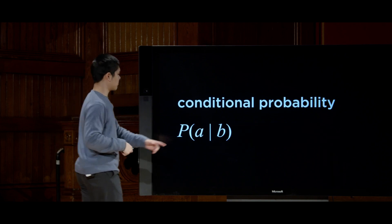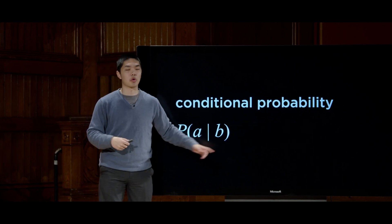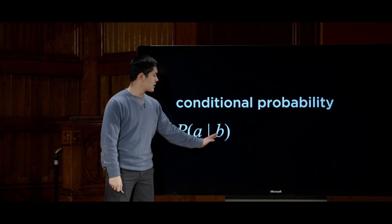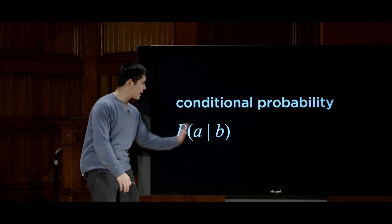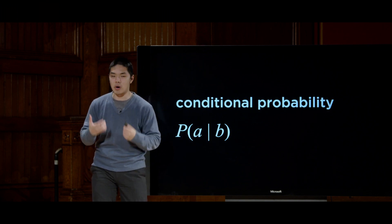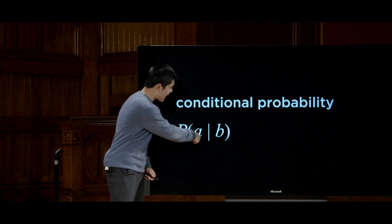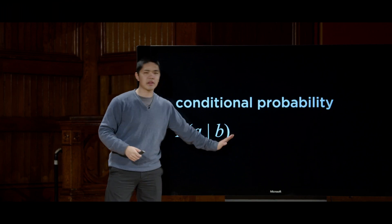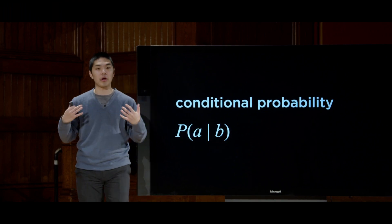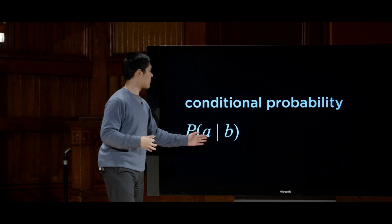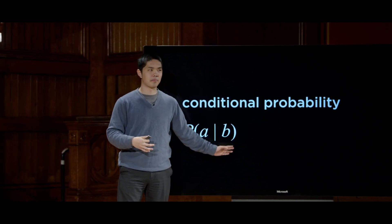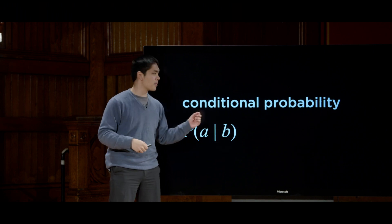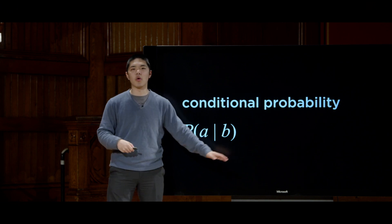In terms of notation, conditional probability looks like this: P(A | B). The thing on the left-hand side of the vertical bar is what we want the probability of — the probability that A is true. On the right side is our evidence, the information we already know for certain. For example, that B is true. The way to read the entire expression is: what is the probability of A given B?